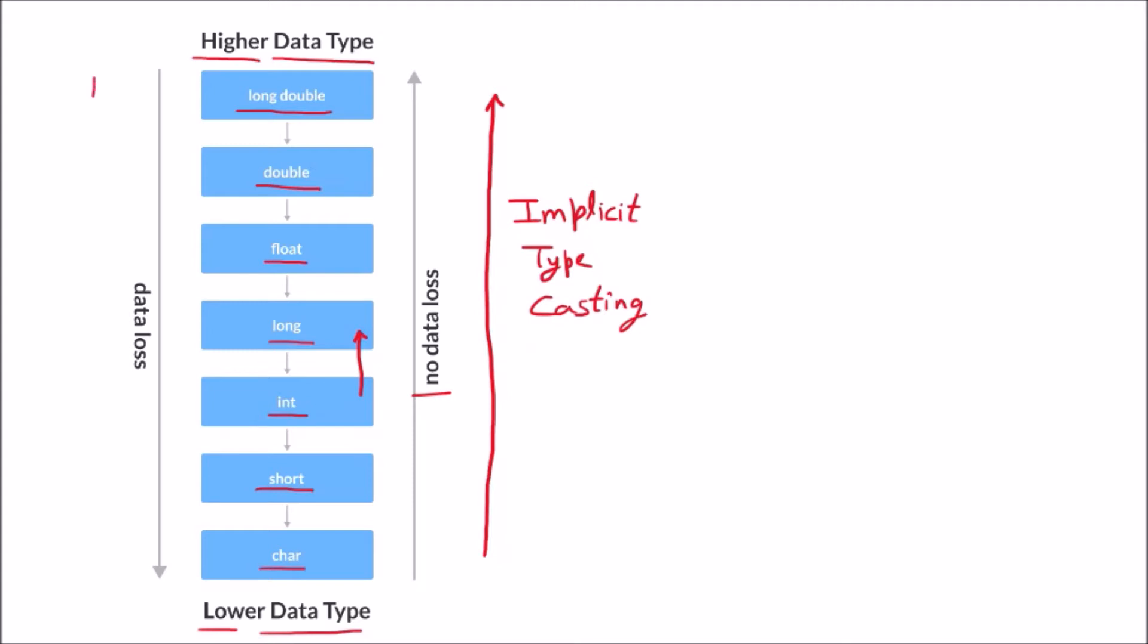But if we are going from higher data type to lower data type, then for sure we are having the loss of data, and this is called the explicit type casting or type conversion, that is done by the user. So here user is involved. If you want to convert to integer, you will for sure mention int before the expression, so that is the explicit and this is done by the user.